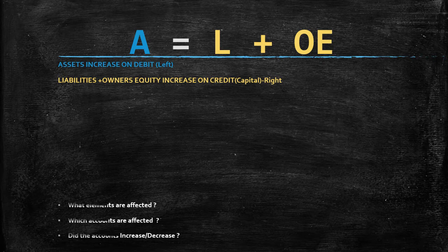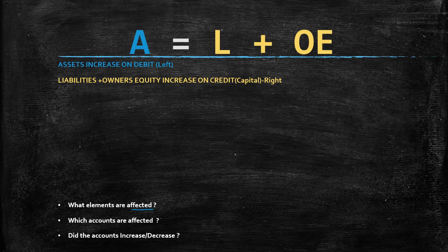These are the three fundamental questions you need to ask yourself every time you are dealing with debits and credits. First of all, which elements are being affected? There are only three elements in accounting: your assets, your liabilities, and your owner's equity.